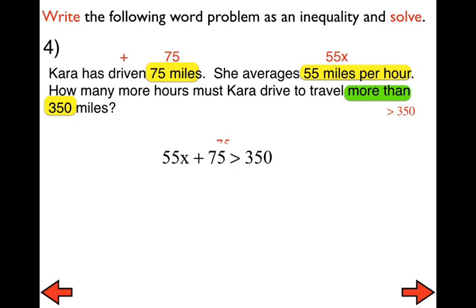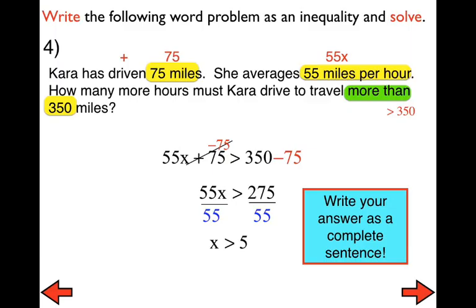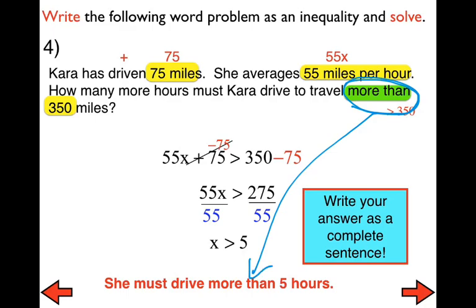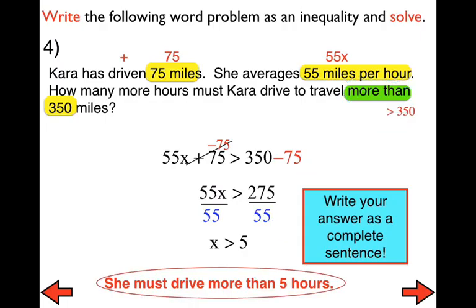Use the subtraction property of inequality — subtract 75 from both sides. Then divide both sides by 55 using the division property of inequalities. We get x is greater than 5. We need to answer with a complete sentence: 'She must drive more than five hours.' Three out of our four problems allowed us to use the words representing the inequality symbol in our sentence because it made sense. Only in one did it not make sense, so make sure your sentence makes sense for what is being asked. That is it for the flipped lesson for today — thank you.